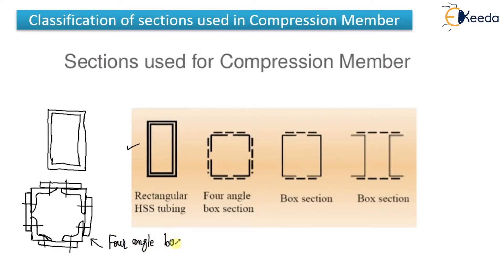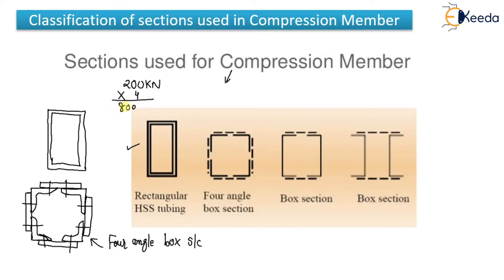The four angle box section is used for heavy loads. For example, if one angle has a capacity of 200 kN, all four together will exceed 800 kN because they act together more effectively. This type is also known as a built-up section. Next is the box section, which uses two channels placed face to face.